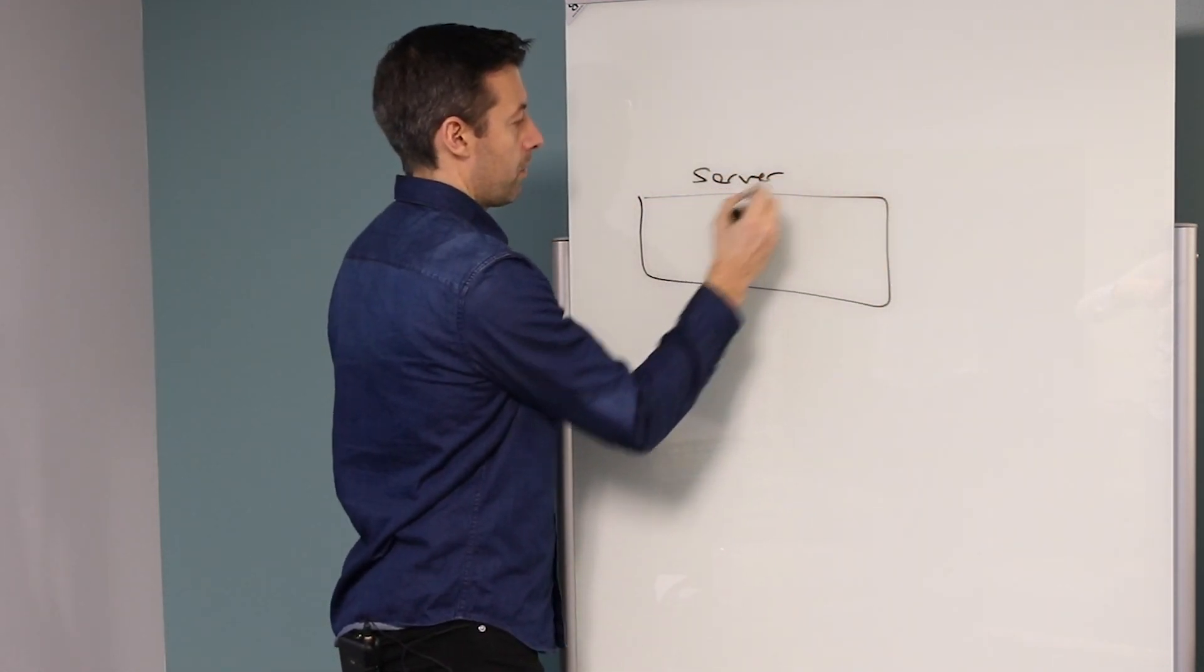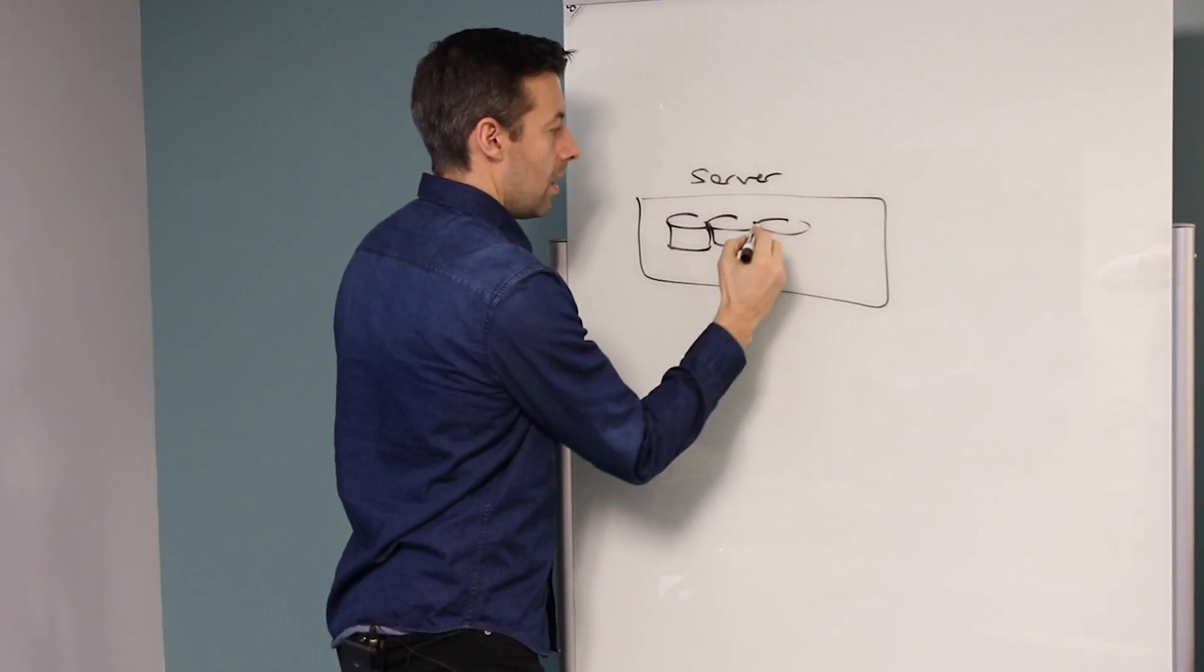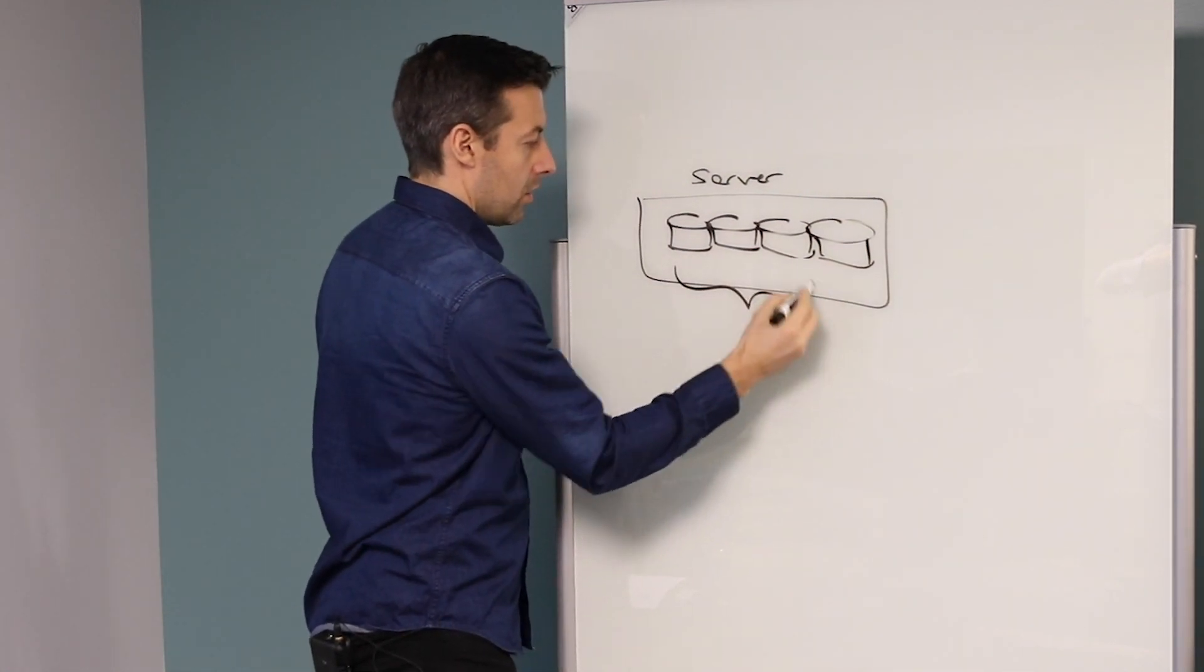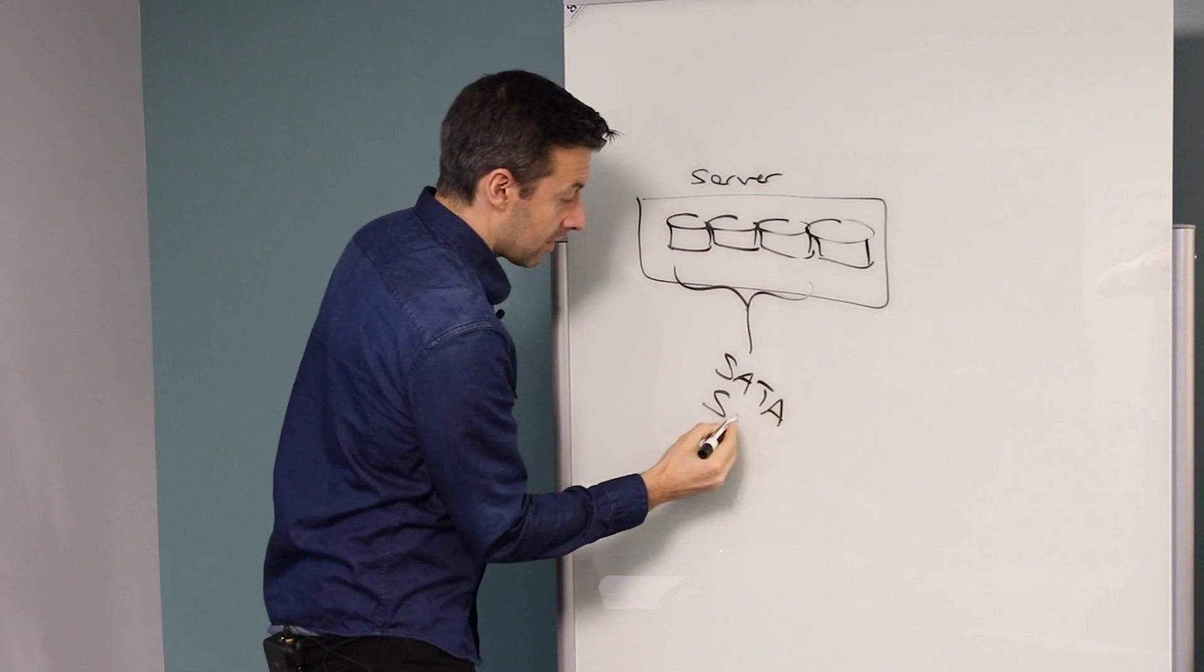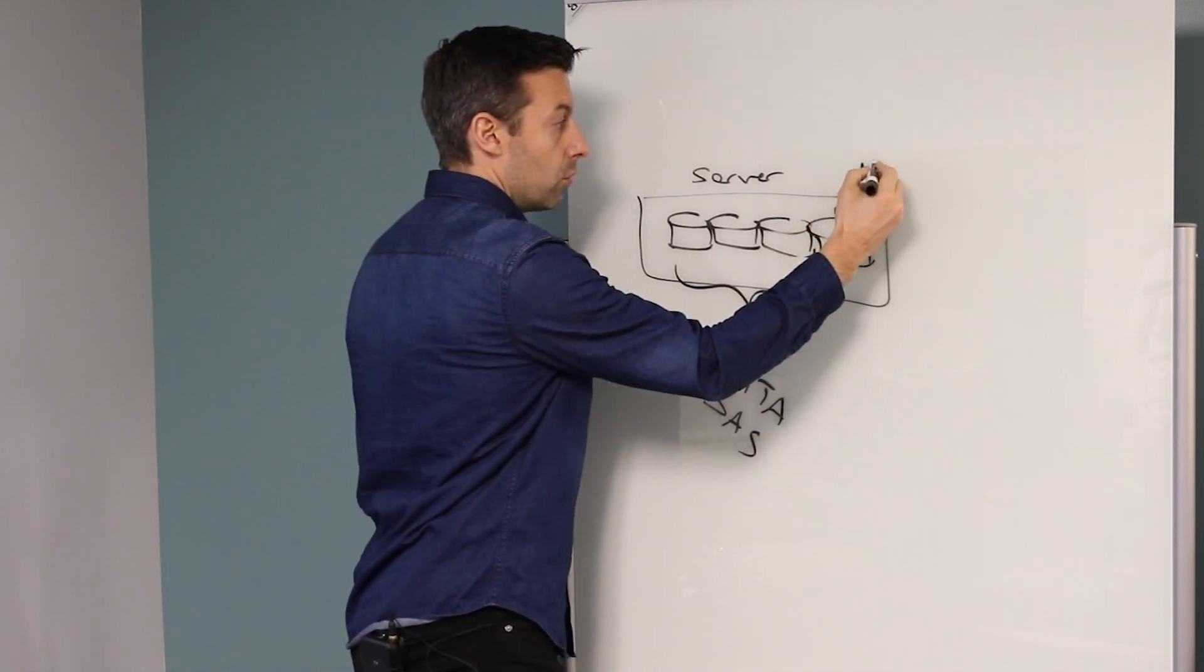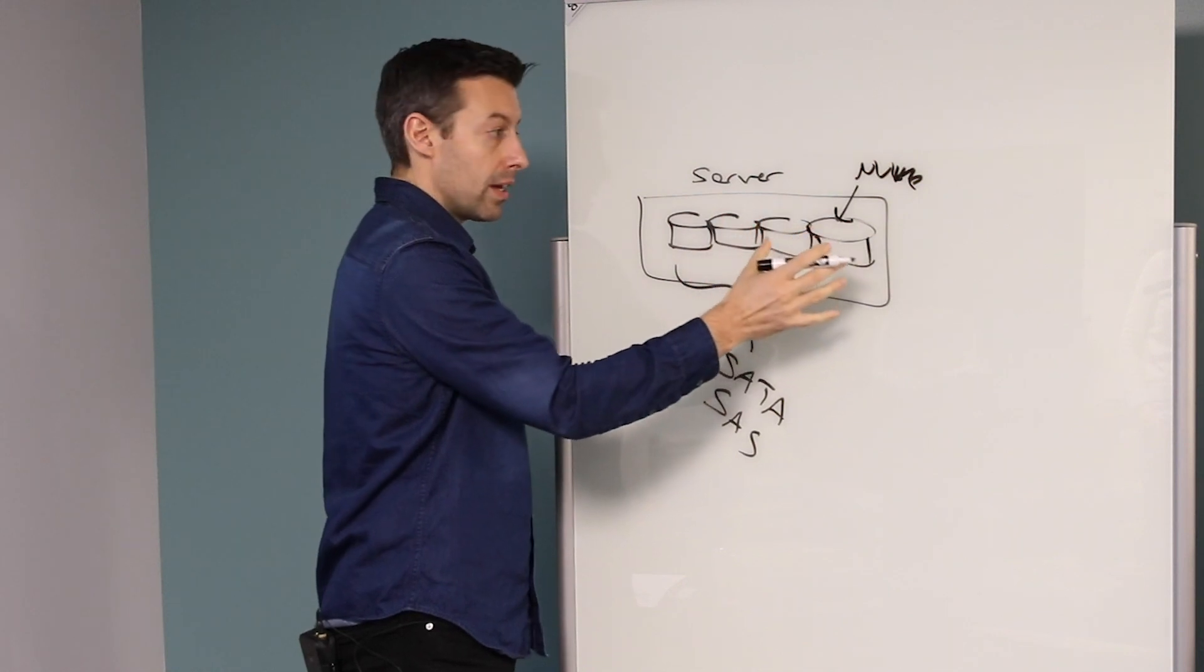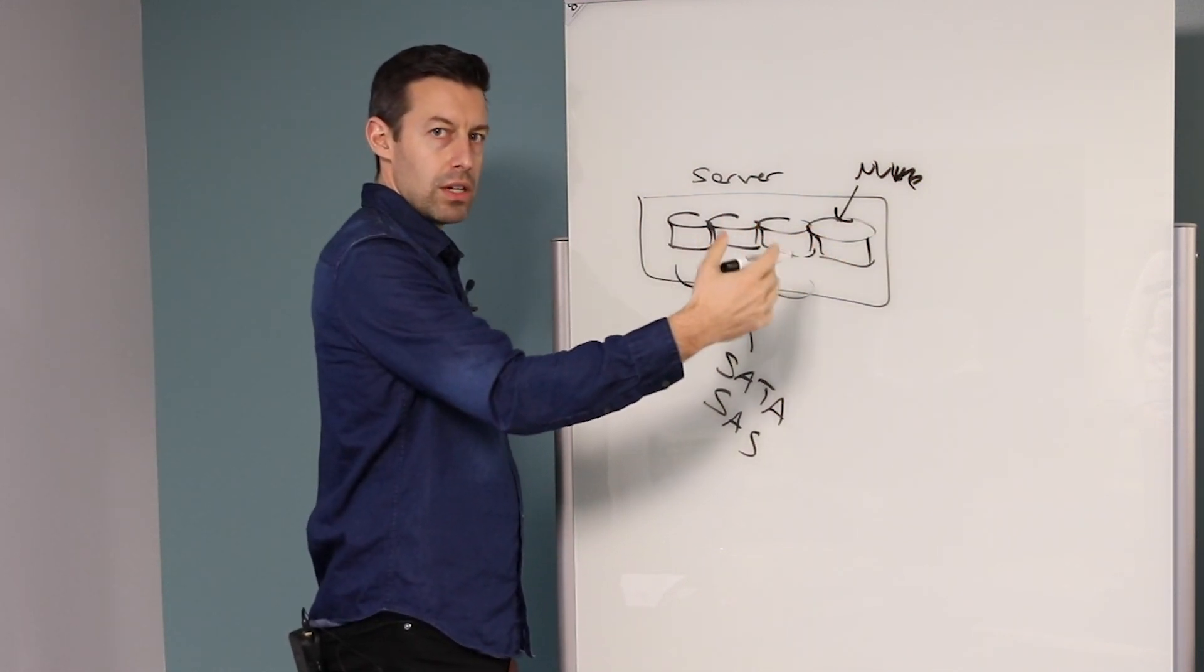You'd have a server, and there'd be a bunch of storage in there. And if we're talking about capacity, a lot of times this storage, these drives are going to be SATA, sometimes SAS as well. But for low latency operations, one or two of these drives would be NVMe. So specific flash drives with low latency for applications that needed really high performance read and write.